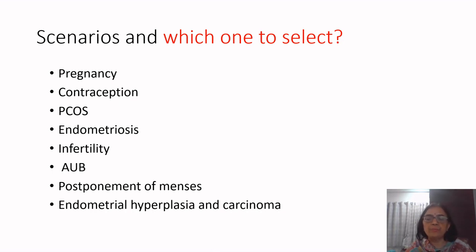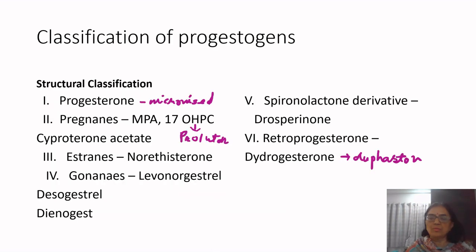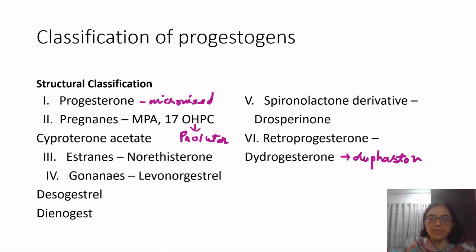Progestogens can be prescribed alone or more commonly in association with estrogen, so combination estrogen-progestogen preparations are more commonly used. To select the proper progestogen, we need to understand the various ways of classifying them. There are two ways: one is a structural classification and the other is a generational classification.